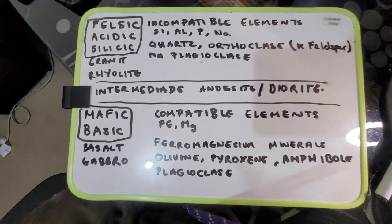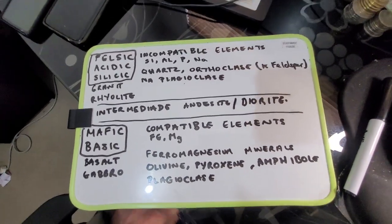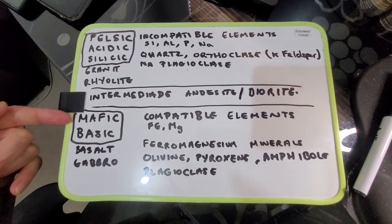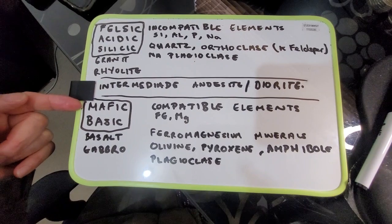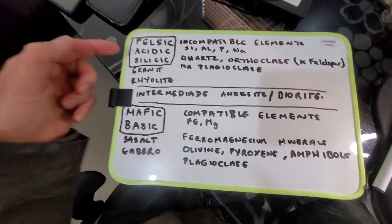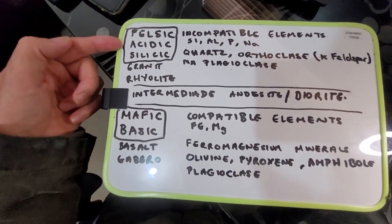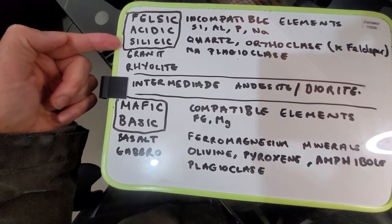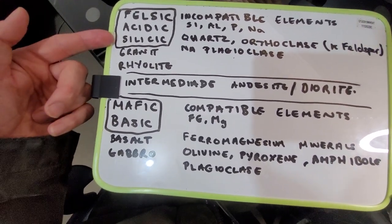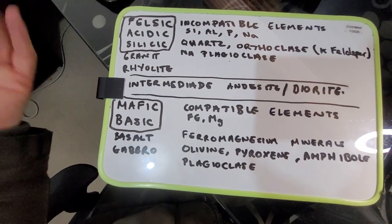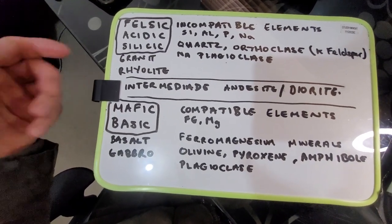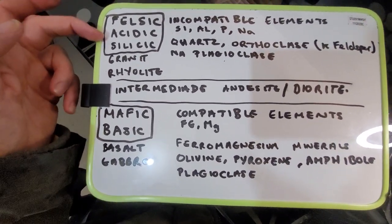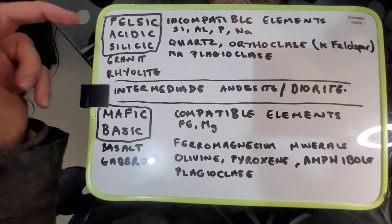Hello, this is going to be a quick video about something that people get confused with - the terminology between felsic and mafic rocks. Sometimes they're termed acidic or silicic, which I just learned today from the U.S. Geological Survey. All these terms are pretty much the same.